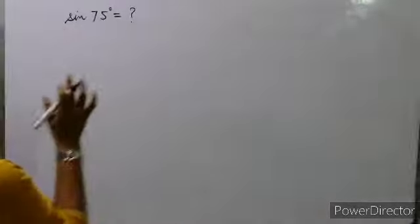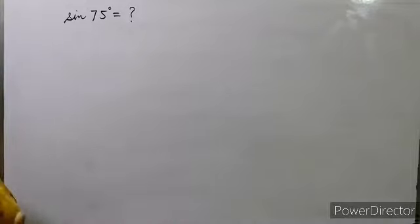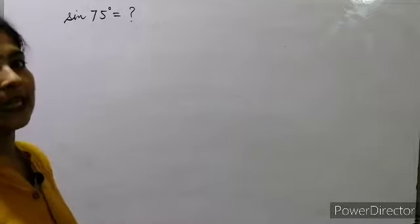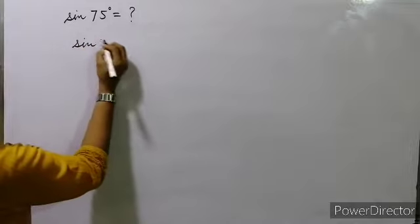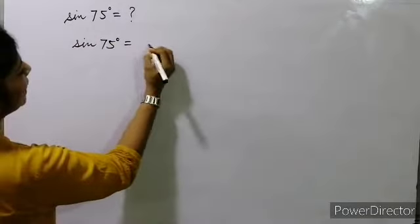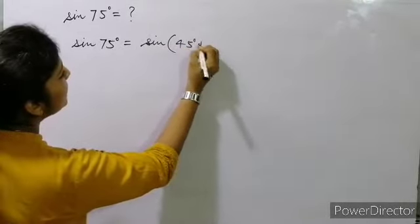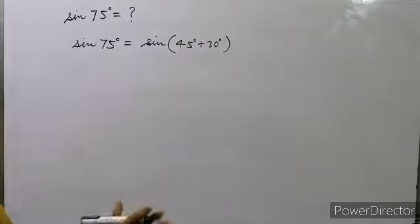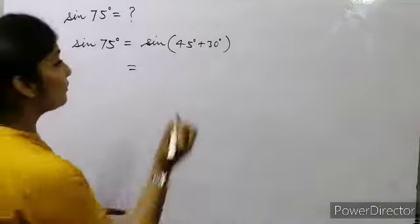First we will see this kind of sum. We have to find out the value of sin 75°. We know the values of sin 0°, 30°, 45°, 60°, and 90°. So we have to find sin 75°. We can write sin 75° as sin(45° + 30°), since 45 + 30 = 75. Now we will apply the formula for sin(x + y).